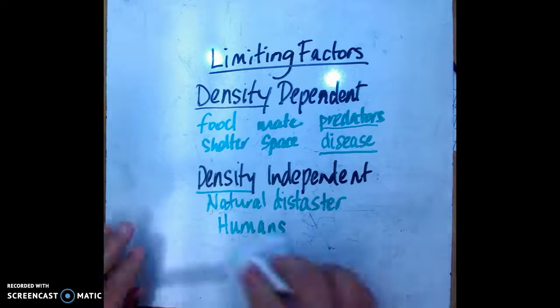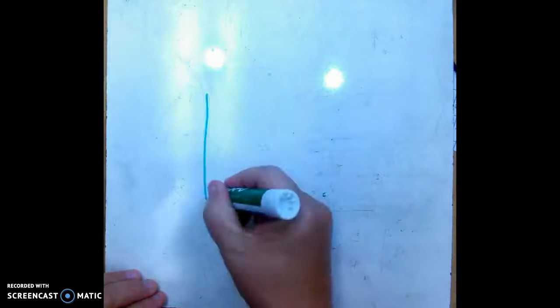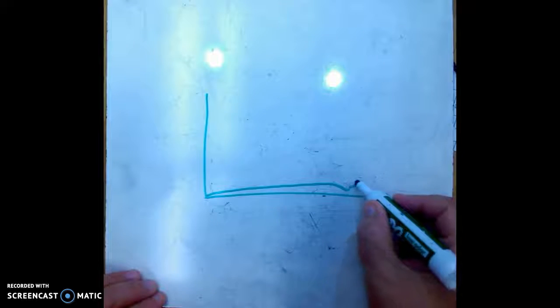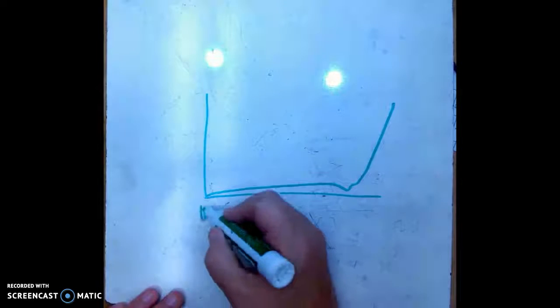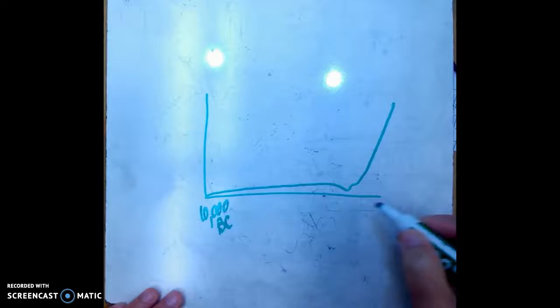And the last thing that we had to talk about was the human population over the course of time. The graph that was in the book showed a graph something like this - from 10,000 BC all the way to 2000, and it shows these events in history.